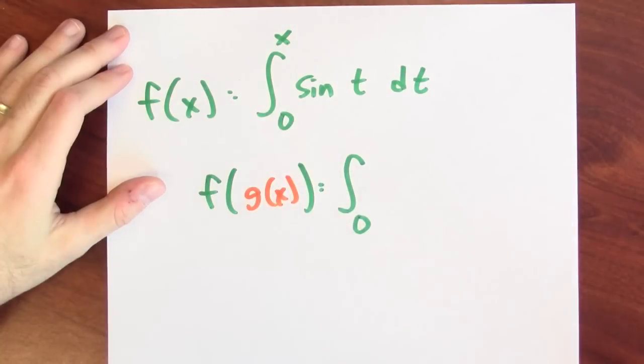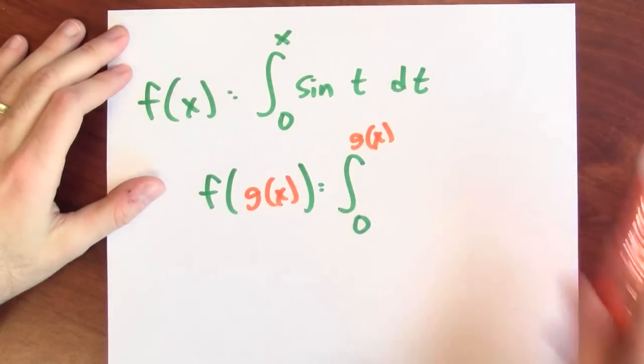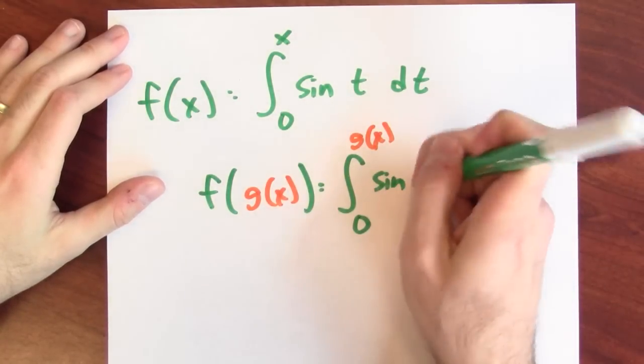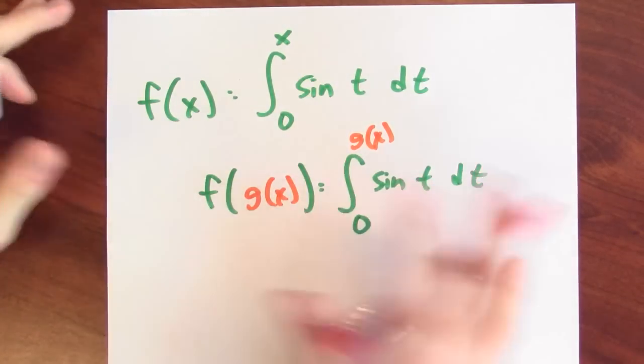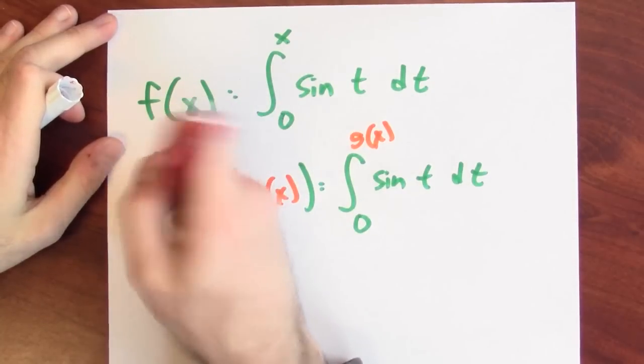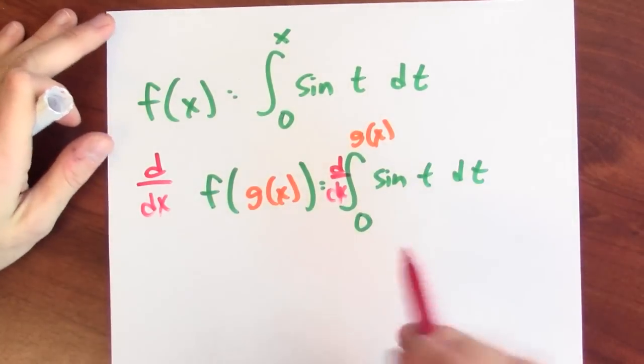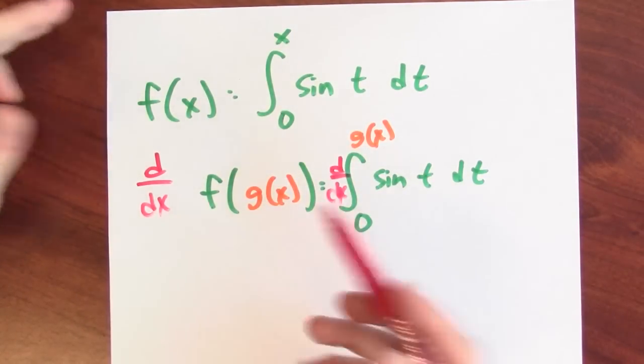That's the integral from 0 to g of x of sine t dt. And specifically, what I want to know is what's the derivative with respect to x of f of g of x?